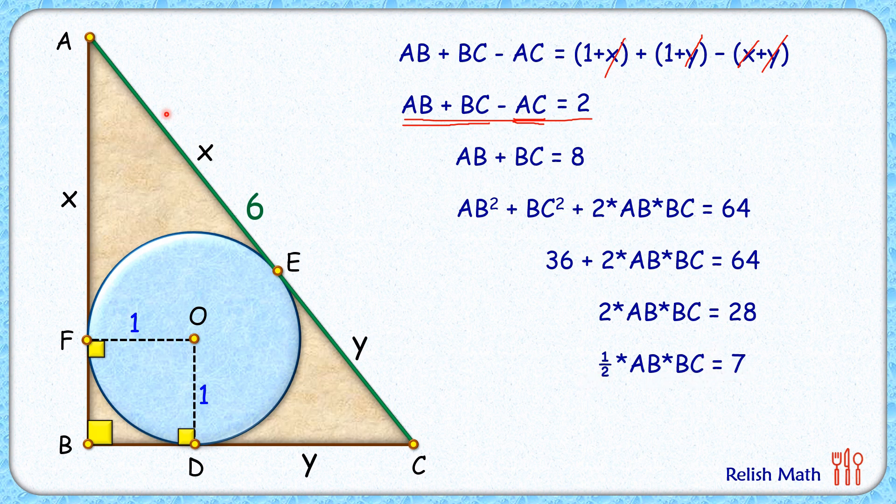And we had to find, and thus area of triangle ABC is 7 cm², and that's our answer. I hope you enjoyed the solution. I will see you in the next video. Till then, tata bye bye.